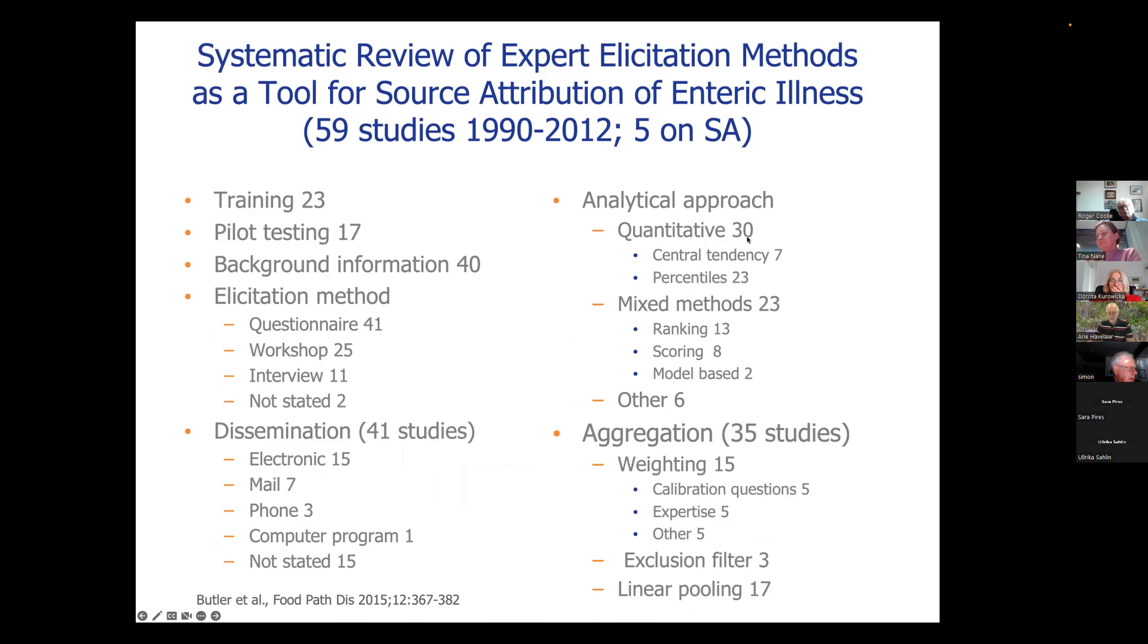About half and half quantitative and more qualitative and semi-quantitative methods. And aggregation, as you can see, they only had data for 35 studies. Half of these were using some kind of weighting, but only five of them were using calibration questions. And then there were studies in something they called exclusion filter. I'll come back to that. And half of the studies did simple unweighted linear pooling. So quite a mixed bag of methods that certainly at that time were used. But I think if you would do the same review now, you'll still see that.